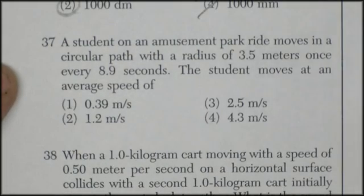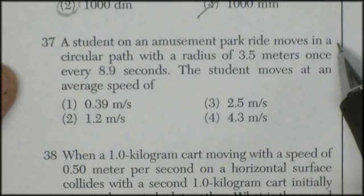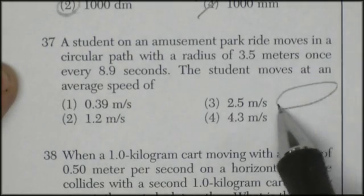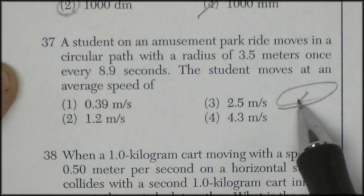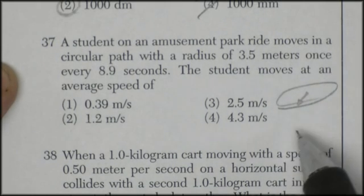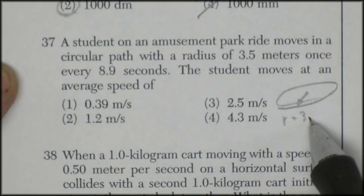Question 37. A student on an amusement park ride moves in a circular path. I hate these things. They make me throw up every time. The radius is 3.5 meters.